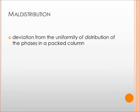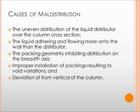Now, any deviation from the uniformity of the distribution over the tower is called maldistribution. There are five main reasons for its occurrence: the uneven distribution of the liquid distributors over the column cross-section, the adherence and flow of liquid onto the walls due to coalescence, inhibition by packing geometry, improper installation of packing materials resulting in void variations, and deviation from the vertical. Like flooding and loading, maldistribution greatly affects the performance of the tower.